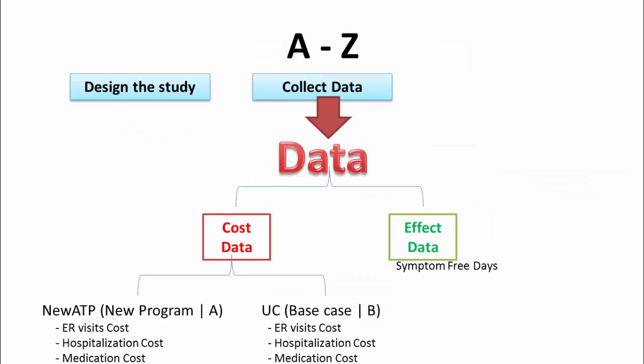So once we design our study and collect the data, it will be either effect data composed of symptom-free days during the study period, and cost data composed of data for treatment A, which is the new program, and treatment B, which is the base case or usual care.